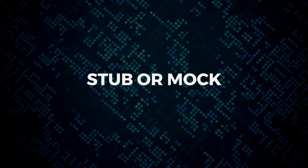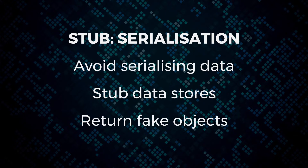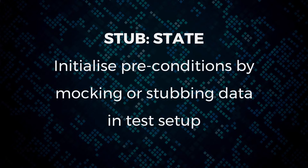Things you could stub or mock include: calls to third-party APIs like Twitter, or calls to your own microservices via HTTP requests. You want to mock those out so there's no dependency on an external service you can't guarantee will be available during unit tests. You should stub your data stores — databases and file access — returning fake objects rather than connecting to an actual database. Also stub state by initializing preconditions in the setup of your test and getting stubs to return fake data.